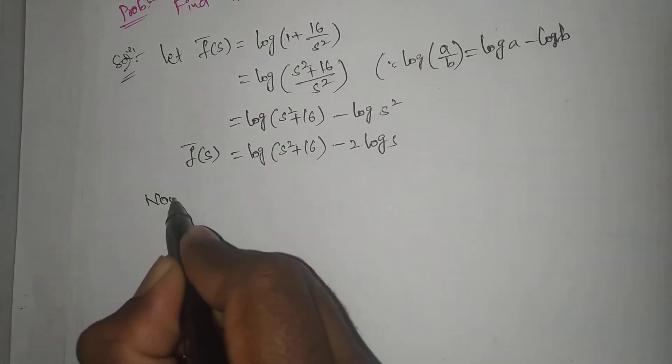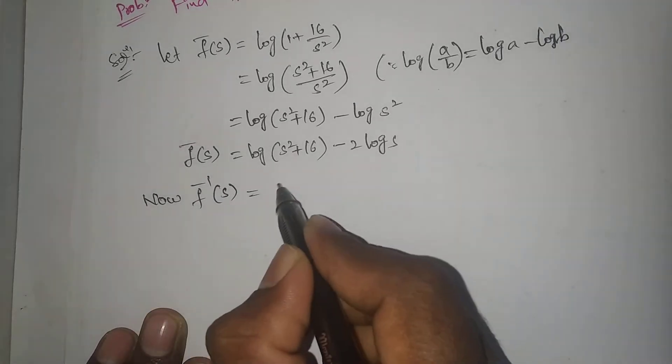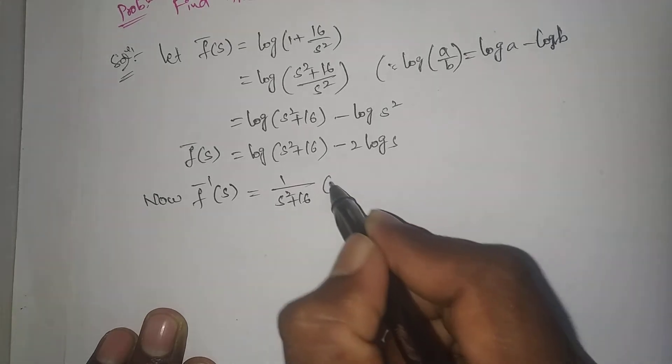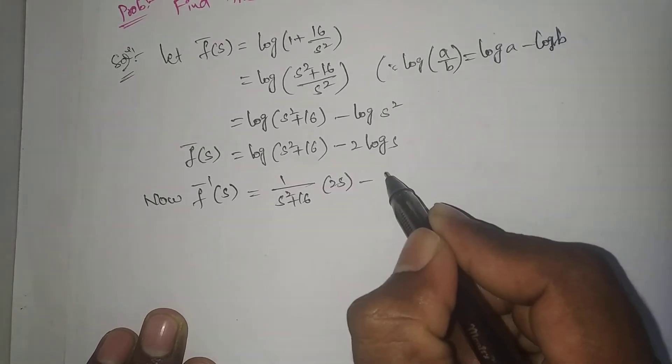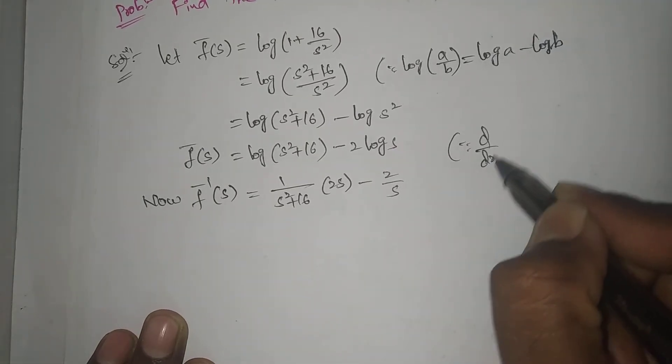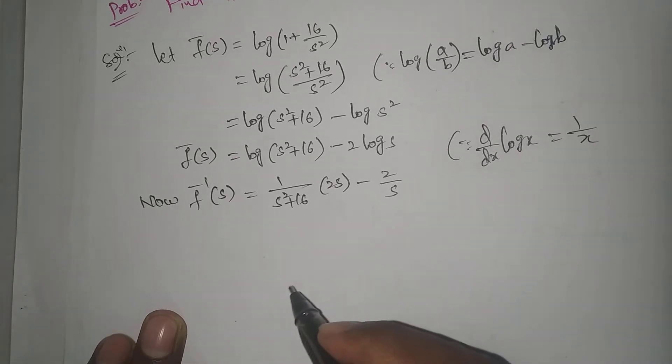Now applying d/ds with respect to s: f̄'(s) = (2s)/(s² + 16) - 2/s. We are using the formula d/dx(log x) = 1/x.